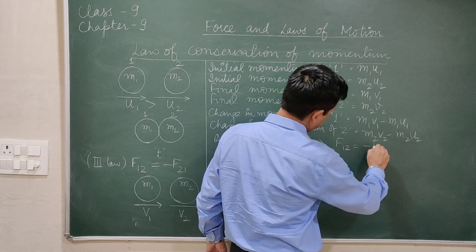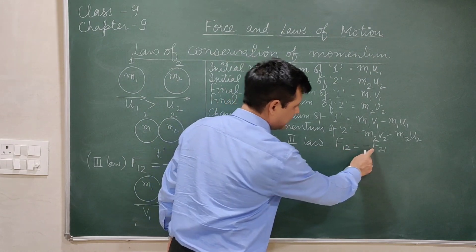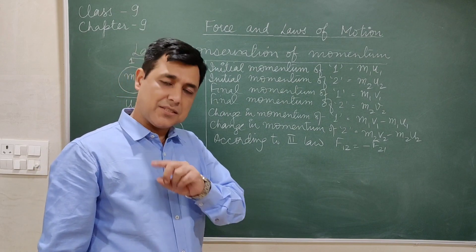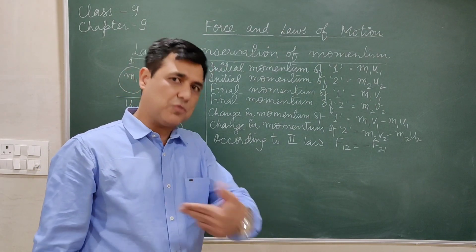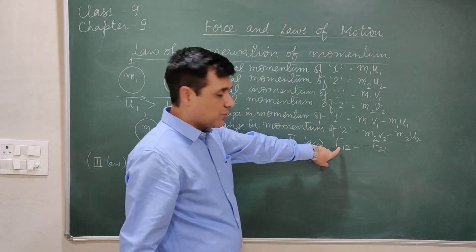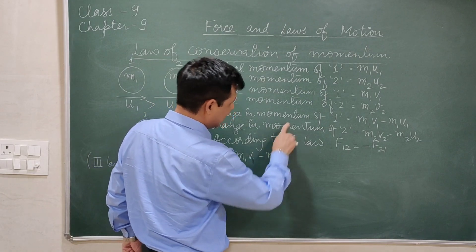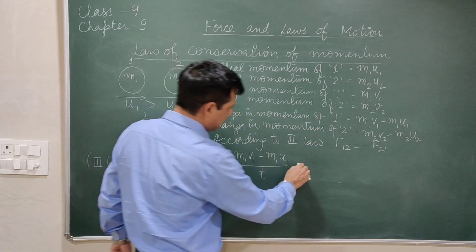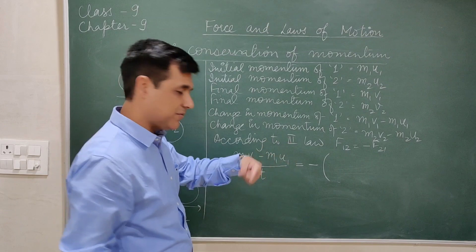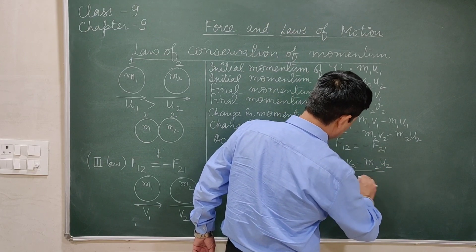Since F12 is equal to minus F21, and according to the second law, the applied force is directly proportional to the rate of change of momentum — the rate of change of momentum of the first object is M1 V1 minus M1 U1 divided by t, and this is equal and opposite to the rate of change of momentum of the second object, which is M2 V2 minus M2 U2 divided by t. Since time t is common, we can cancel it.